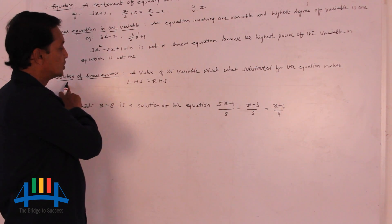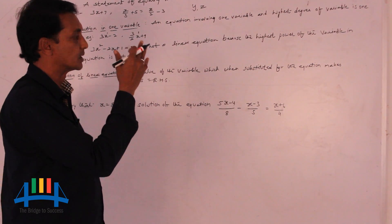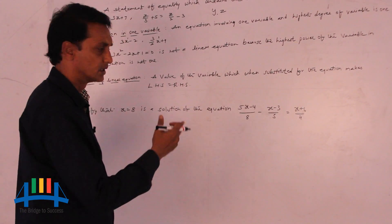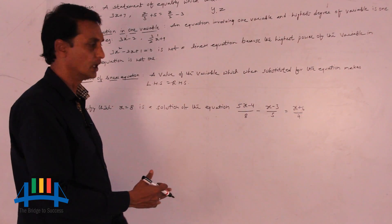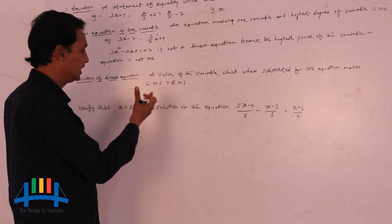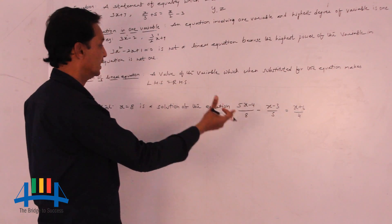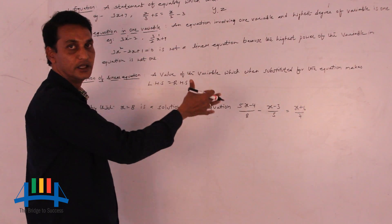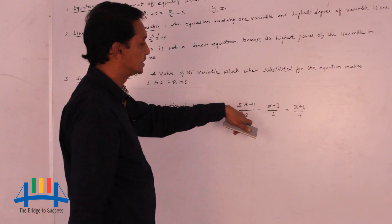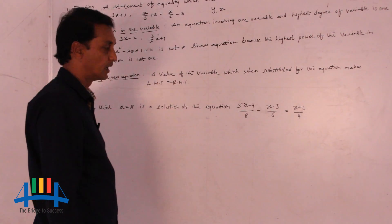Now let us see the solution of a linear equation. A value for the variable which, when substituted into the equation, makes LHS equal to RHS — that is the solution. Whenever we take an equation with a left hand side and right hand side, if we substitute an unknown value and get LHS equal to RHS, then that value is the solution. Here one equation is given: 5x minus 4 by 8 minus x minus 3 by 5 equals x plus 6 by 4.